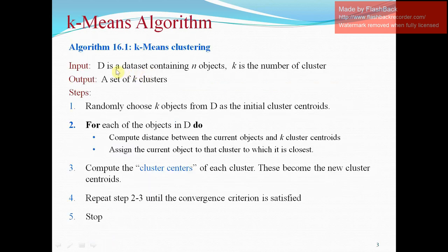Now, the algorithm takes input D as a data set containing N objects and K is the number of clusters. The output would be a cluster of K, a set of clusters, K clusters. The first step states that randomly choose K objects from D as the initial cluster centroid.